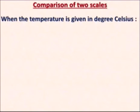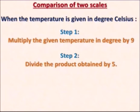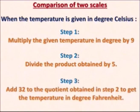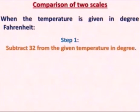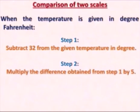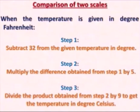To convert a temperature from degree Celsius to degree Fahrenheit: Step 1 — multiply the given temperature in Celsius by 9. Step 2 — divide the product by 5. Step 3 — add 32 to the quotient to get the temperature in degree Fahrenheit. To convert from Fahrenheit to Celsius: Step 1 — subtract 32 from the given Fahrenheit temperature. Step 2 — multiply the difference by 5. Step 3 — divide the product by 9 to get the temperature in degree Celsius.